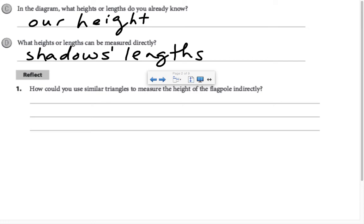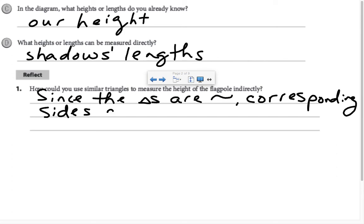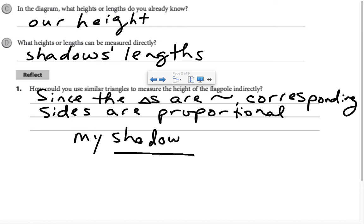And how can we use similar triangles to measure the height of the flagpole indirectly? Since the triangles are similar, their corresponding sides are proportional. So my shadow over my height would equal the flagpole's shadow over the flagpole's height.